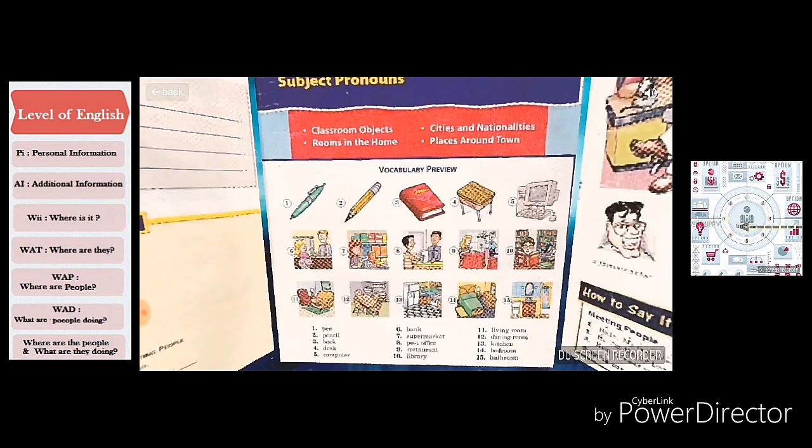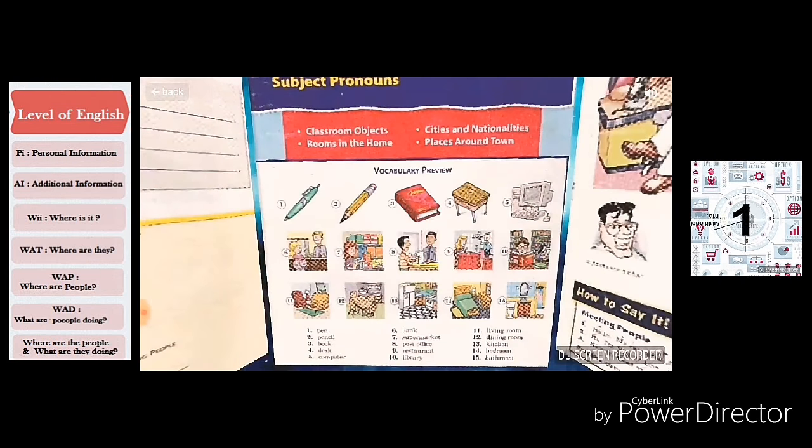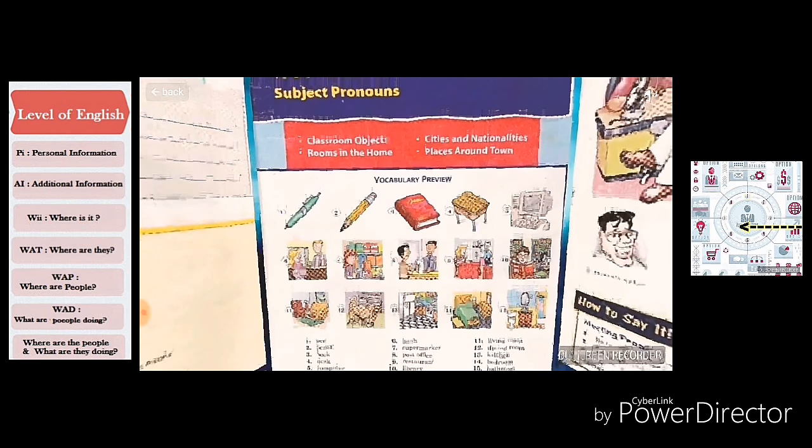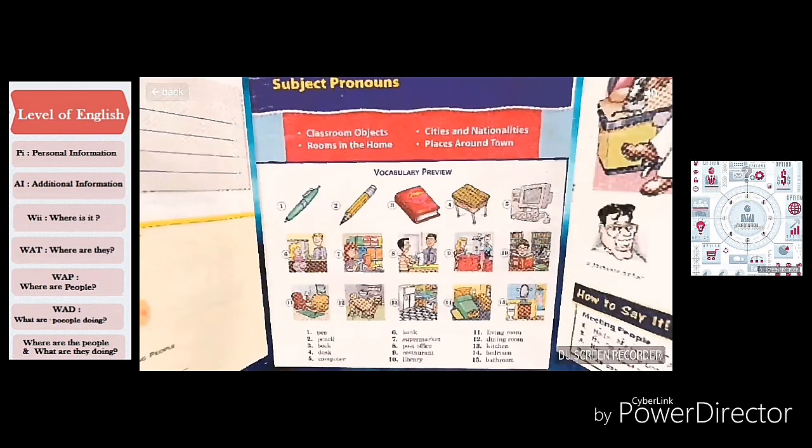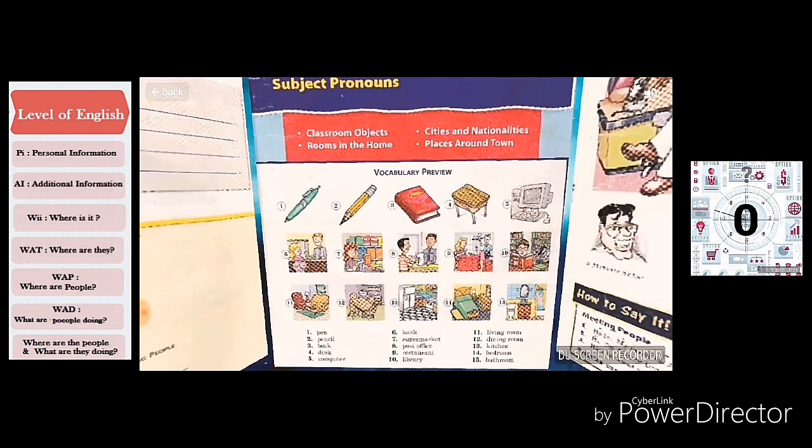Excuse me class, can you please help me? Listen and repeat. Pen, pencil, book, desk, computer, bank, supermarket, post office, restaurant, library, living room, bedroom, dining room, kitchen, bedroom, bathroom.